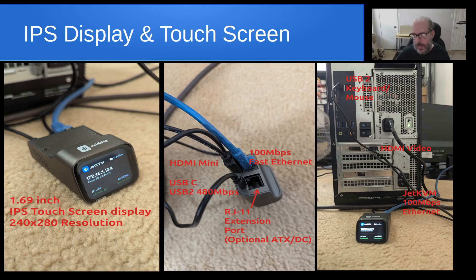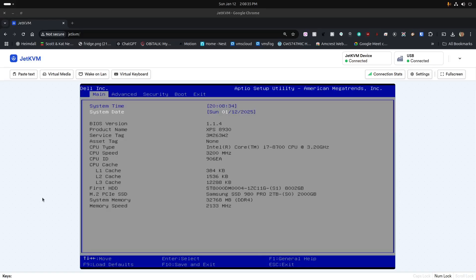The other cable plugged in is for video — full-size HDMI on the Dell side and mini HDMI on the JetKVM side, and that cable is also included. The blue Ethernet cable doesn't connect to the Dell; it's connected over to one of my Ethernet switches. The Dell is not physically connected to the network in this demo, just to highlight what the JetKVM is actually doing. The Dell has a 10 gigabit SFP+ card and an integrated one gigabit Ethernet port on its motherboard.